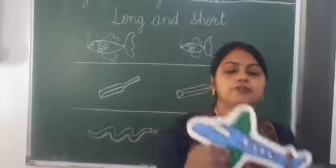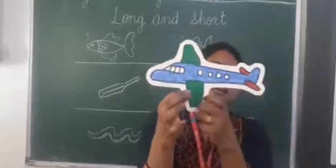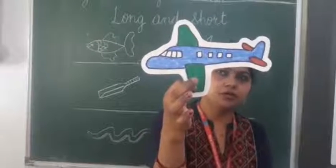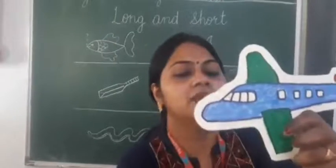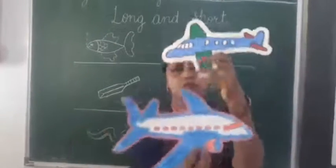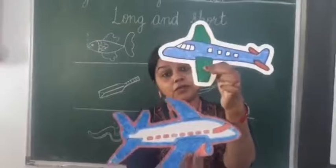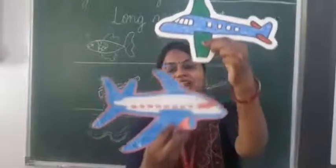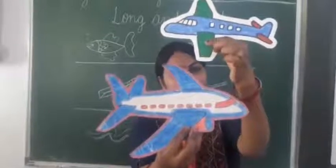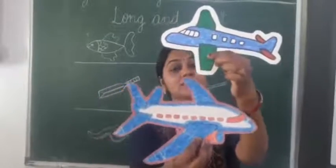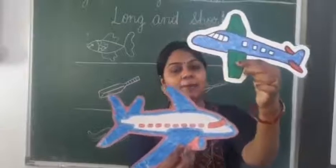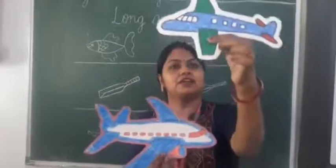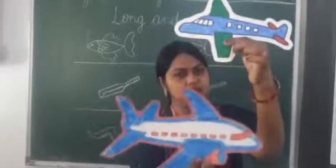Suppose I want to show you a short object. Can you tell me, this is long or short? No, you can't tell. But now I will show you two pictures. Now you can do the comparison. Yes ma'am, this one is short and this one is long. So we do the comparison in length — lengthwise comparison. Short and this one is long.